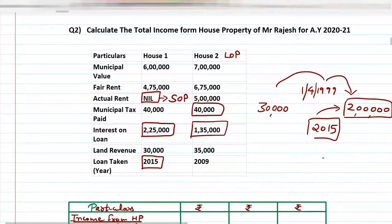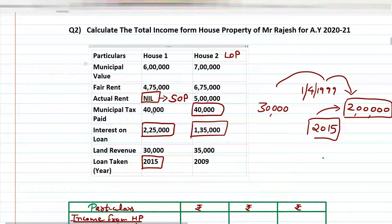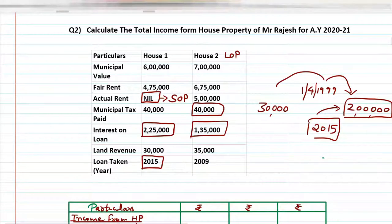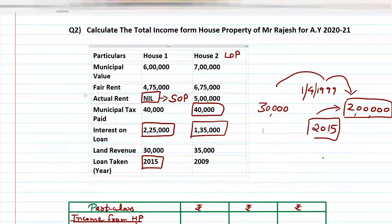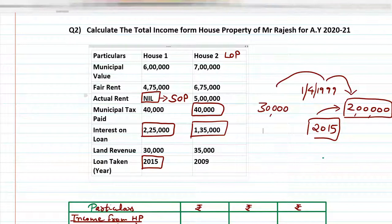We have already solved question number 1, where I explained how to identify LOP and SOP. Let me revise once more: if we consider house 1 and house 2, you need to check the actual rent. The property where actual rent is nil will be considered SOP (Self Occupied Property), and where actual rent has an amount given, it will be LOP (Let Out Property).